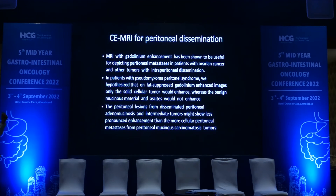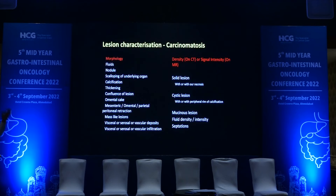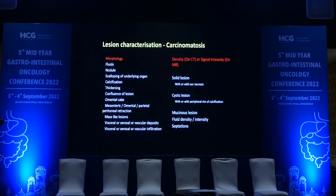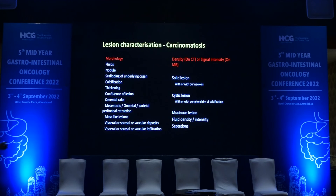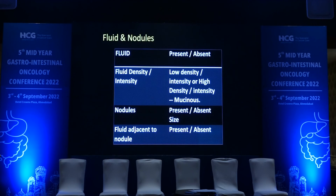Lesion characterization features include: fluid nodules, scalloping, calcification, thickening, confluence of lesions, omental cake, mesenteric and peritoneal caking in separate regions, peritoneal retractions, mass-like lesions, visceral and serosal deposits, and infiltration. Remember: deposits and infiltration are two different points — infiltration requires intervention into the viscera or serosa, whereas deposits can be ablated. Solid lesion with or without necrosis, cystic, peripheral rim of calcification, mucinous — these are the characterization categories.